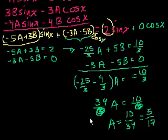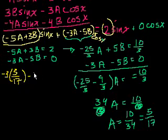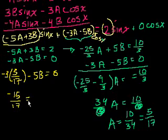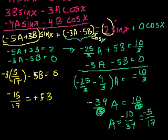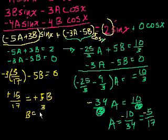Now solve for b using the second equation: minus 3 times a (which is minus 5/17) minus 5b equals 0. That gives plus 15/17 equals 5b, so b equals 3/17. The hard part was not losing the negative signs.